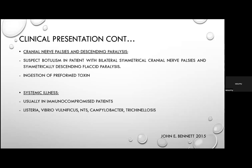Diarrhoea followed by cranial nerve palsies and descending paralysis should raise suspicion for botulism — specifically, bilateral symmetrical cranial nerve palsies and symmetrically descending flaccid paralysis due to ingestion of preformed toxins that irreversibly block neuromuscular junction acetylcholine release. Recovery occurs over weeks to months. Diarrhoeal illness associated with systemic illness is usually in immunocompromised patients.